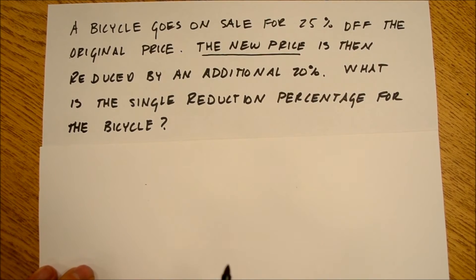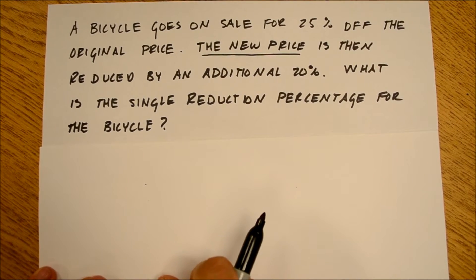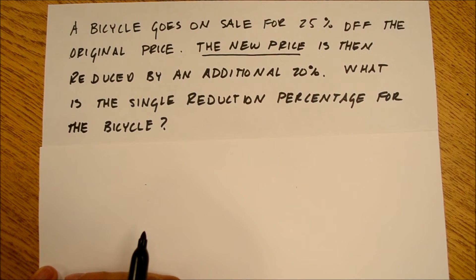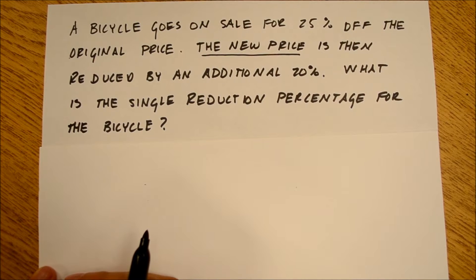So I showed this problem to my kids in a class a couple of days ago. A bicycle goes on sale for 25% off the original price. The new price is then reduced by an additional 20%. What's the single reduction percentage for the bicycle?